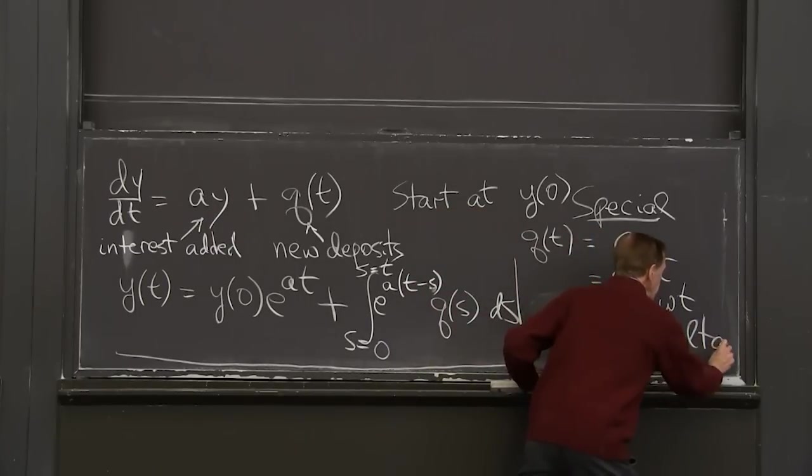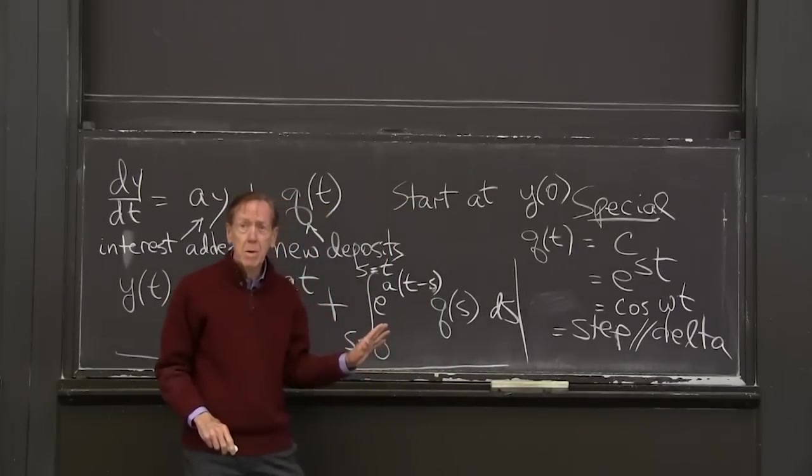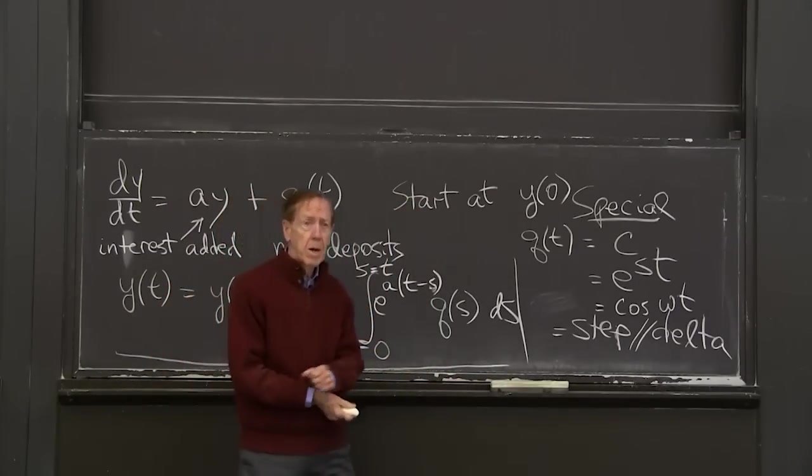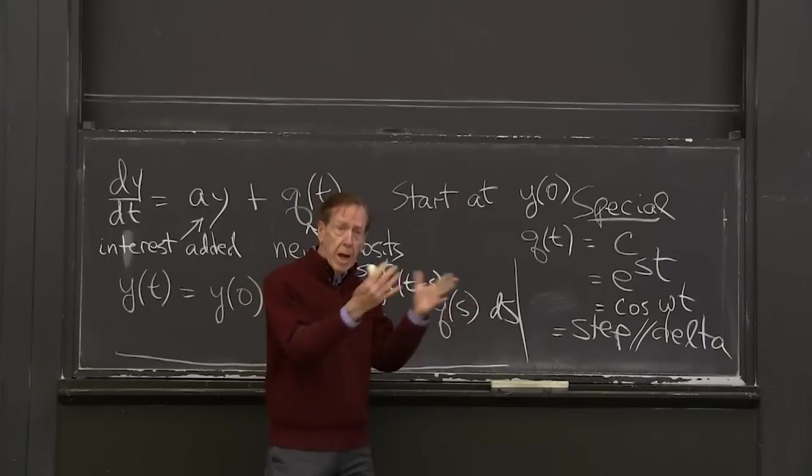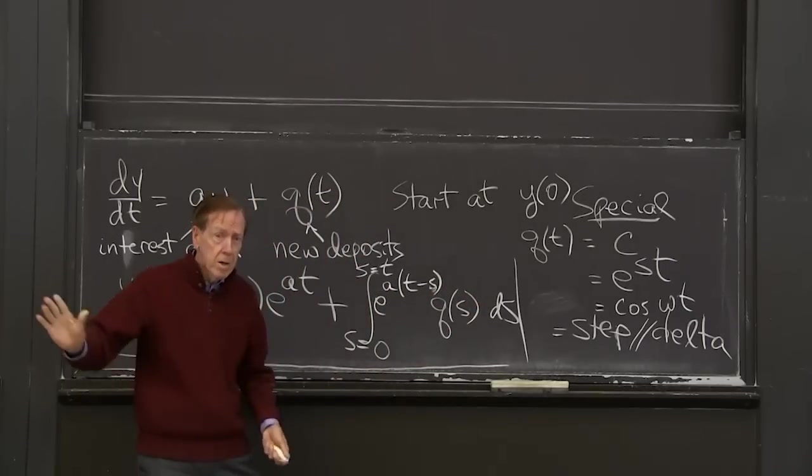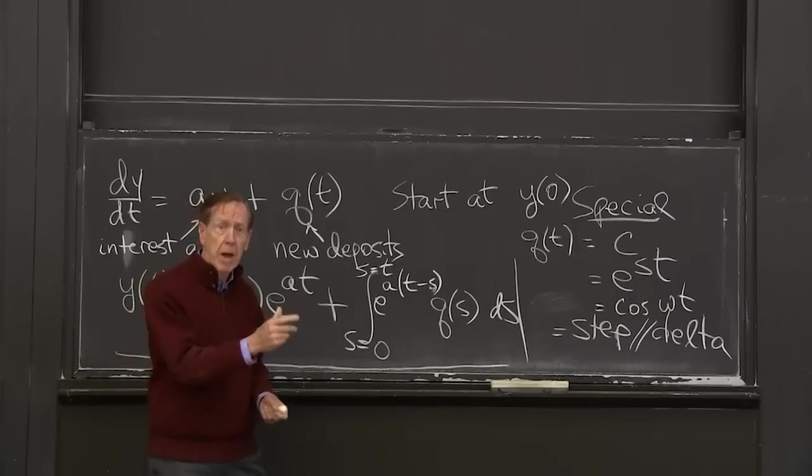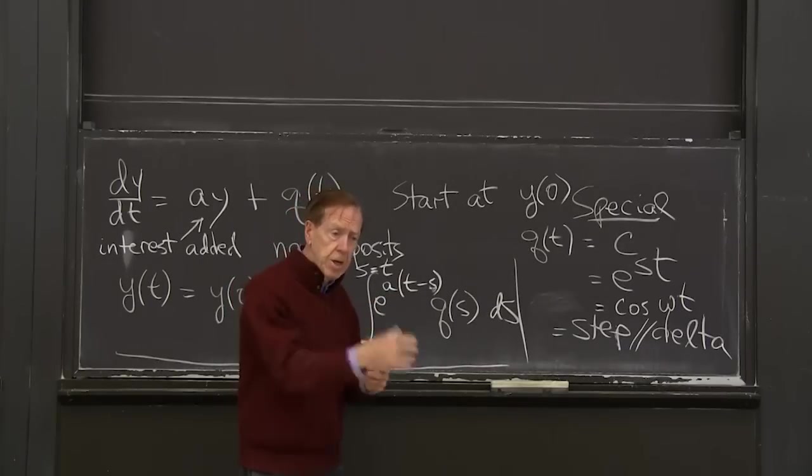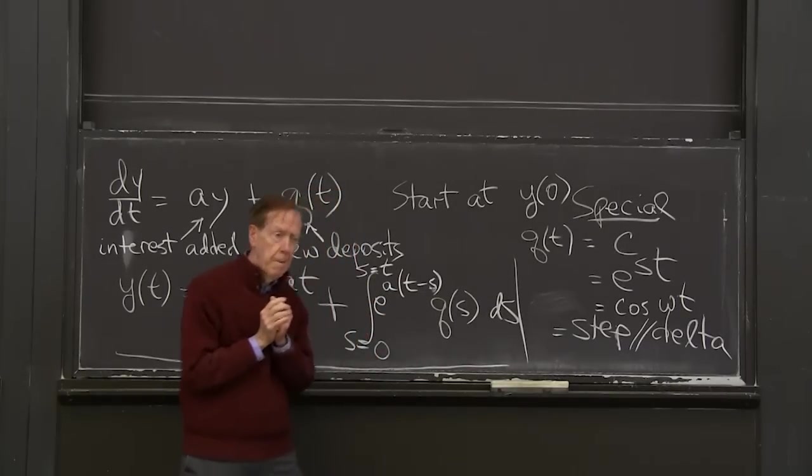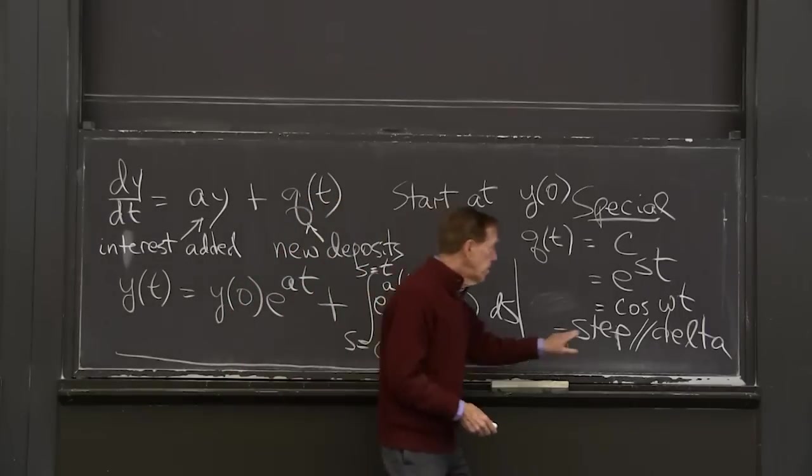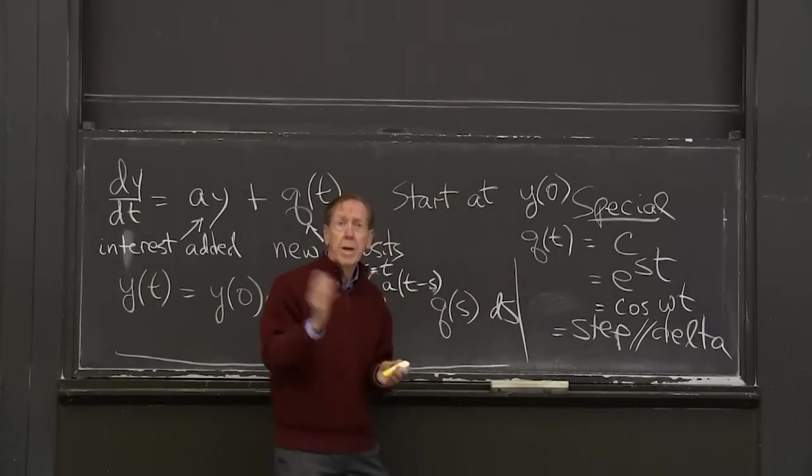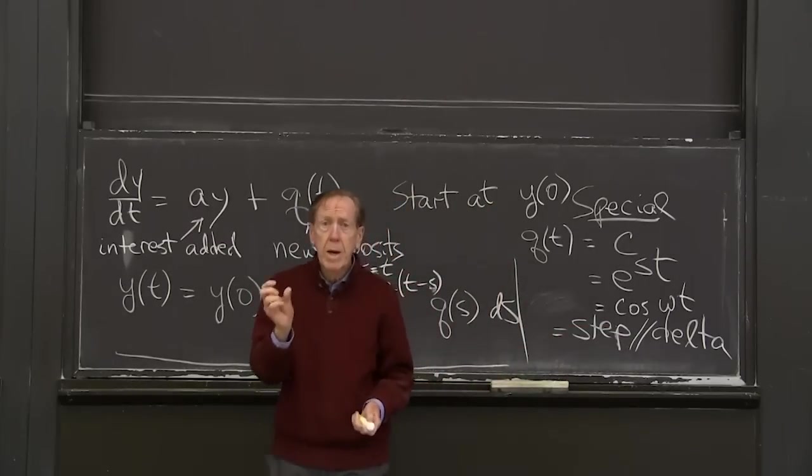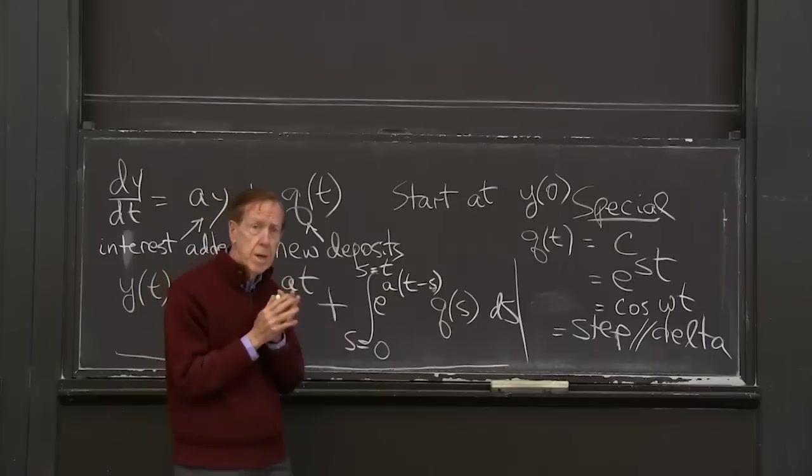and this is the especially interesting one, a delta function. And what is a delta function? Which doesn't always come into the basic differential equations course, but it belongs there. Because in a model of reality, a delta function is like a golf club hitting a golf ball. In an instant, something happened. Or a baseball bat hitting a baseball. It gives it an instant velocity. It's an impulse. So step function is like a light switch off and then on. delta function is all in one instant, an impulse. And you'll see that coming.